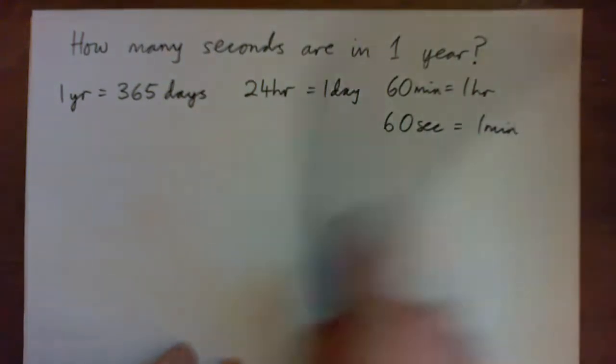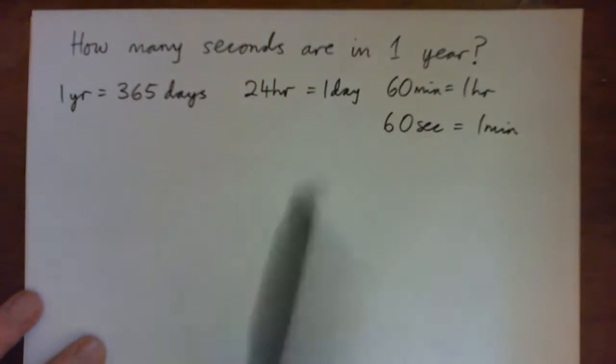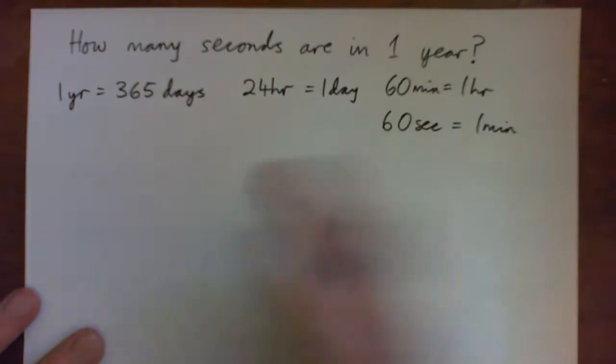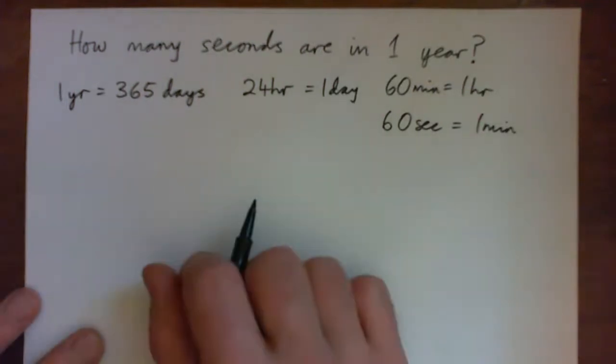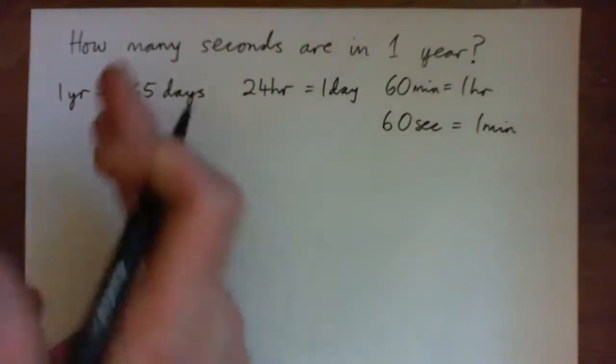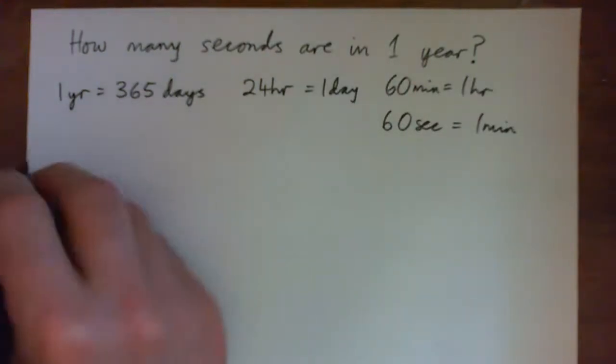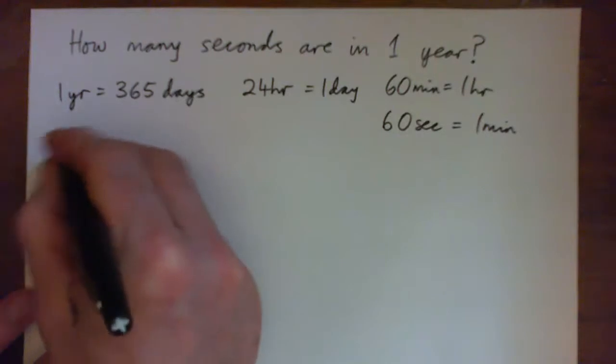So we have to get from years all the way to seconds. Let's do unit analysis. You could just multiply: one year is 365 days, so that's 365.